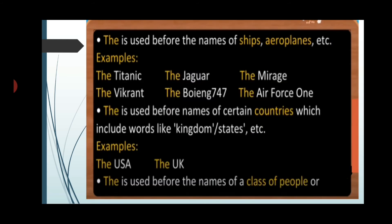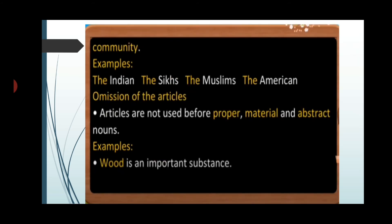The is used before the names of ships and aeroplanes, such as the Titanic, the Jaguar, the Mirage, the Vikrant, the Boeing 747, and the Air Force One. The is used before names of certain countries that include words like kingdoms or states — for example: the USA, the UK. The is also used before the name of a class of people or community, such as the Indians, the Sikhs, the Muslims, the Americans.